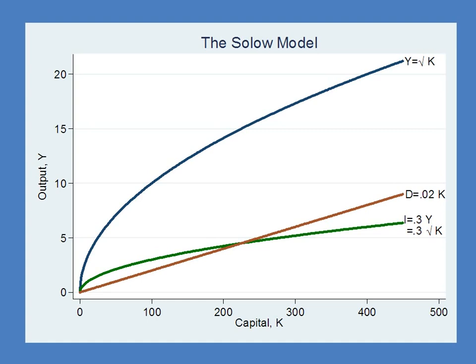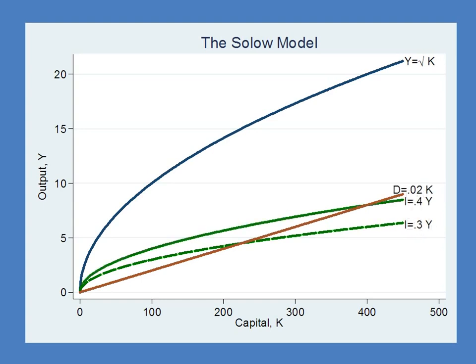What happens now if our savings rate, which is let's say 30%, goes up to 40%? With an increase in the savings rate, the entire investment curve shifts up. In particular, beginning at the old steady state, what happens immediately is that you get investment which is now greater than depreciation. And because investment is greater than depreciation, you get capital accumulation.